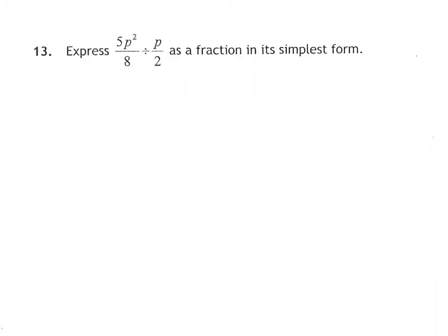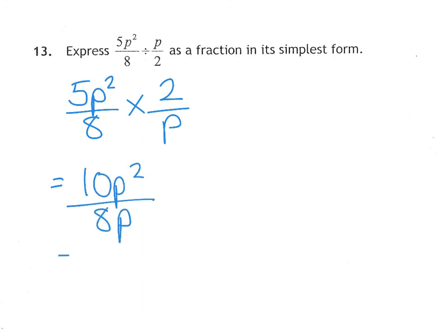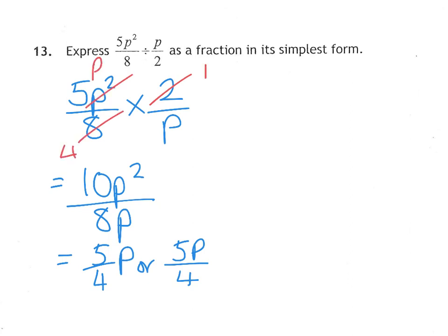Question 13 is dividing algebraic fractions. Remember: keep it, change it, flip it — keep the first fraction, change the division sign to multiplication, and flip the second fraction. Multiplying straight across gives 10p² over 8p. Simplify: 10 and 8 both divide by 2 to give 5/4, and p² ÷ p = p. Answer: 5p/4. Alternatively, cross-cancel first: you get 5p × 1 on top and 4 × 1 on the bottom — same result. Either method is fine.